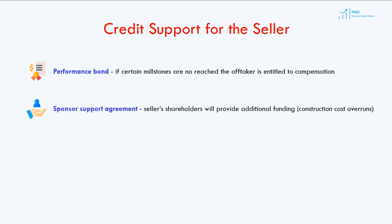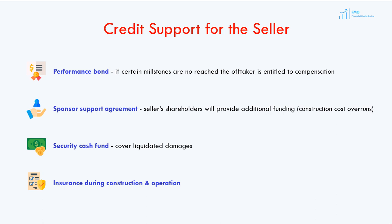A sponsor support agreement, which represents guarantees from the seller's equity investors, may also be required. These are guarantees that additional funding will be provided by the investors in case of a funding shortfall, for example due to construction cost overruns. The seller is also required to set up and maintain a security cash fund that the off-taker can draw on to cover penalties payable by the energy seller. Finally, the energy seller is required to acquire and maintain appropriate insurance during the construction and operation of the project.